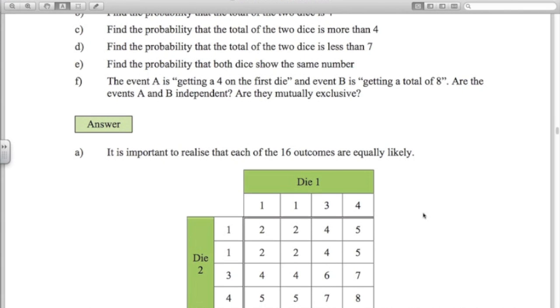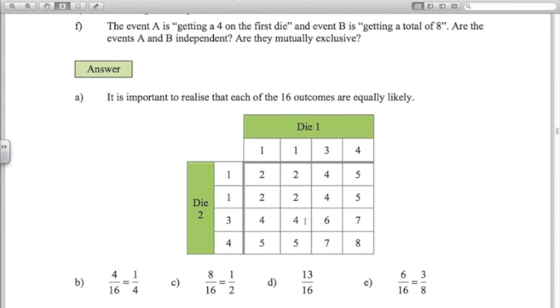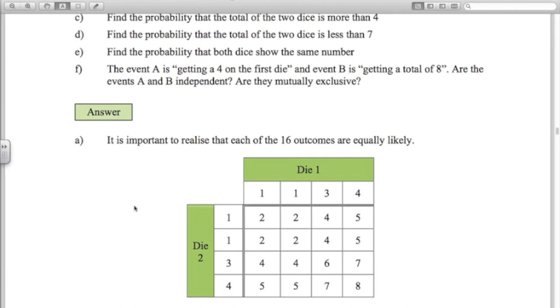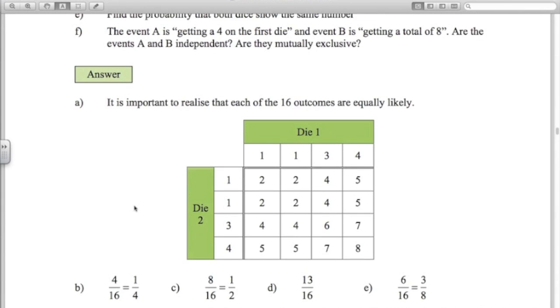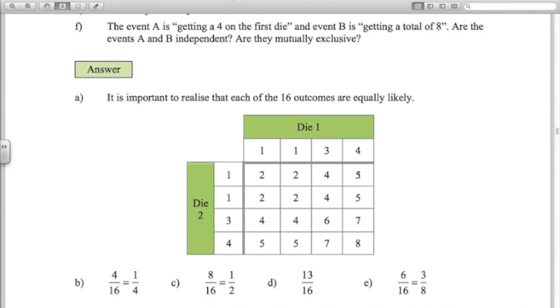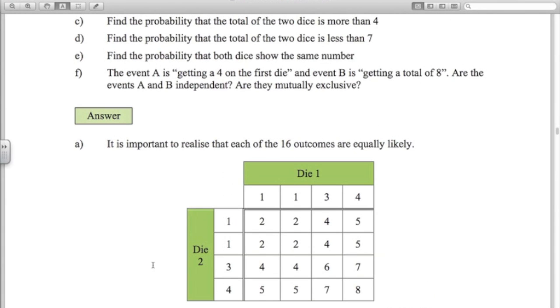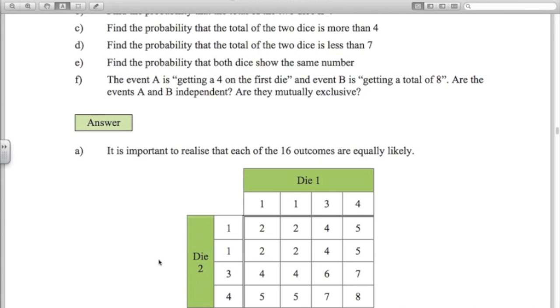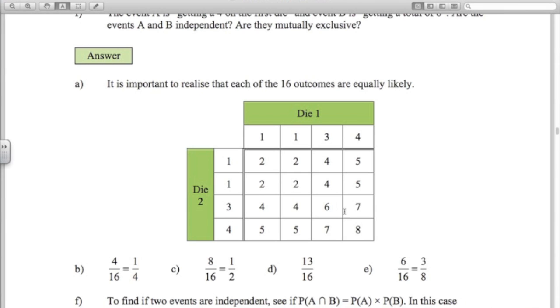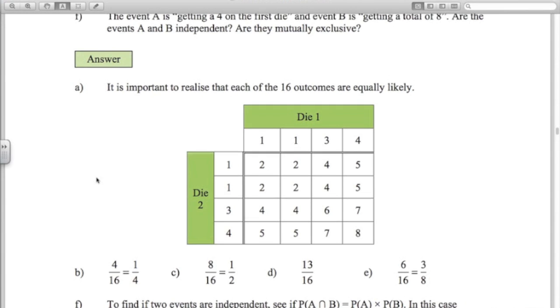So let's answer the question now. Once we've got the sample space, it's easy. Find the probability that the total is 4. I can see 1, 2, 3, 4 times 4 appears. So 4 out of 16 or 1 quarter. What's the probability that the total of the two dice is more than 4? So more than 4 doesn't include 4, so 5 and above. 1, 2, 3, 4, 5, 6, 7, 8. 8 out of the 16, so the probability is a half. The probability that is less than 7. So that would be everything but these three here. So we've got 13 out of the 16 that are less than 7.